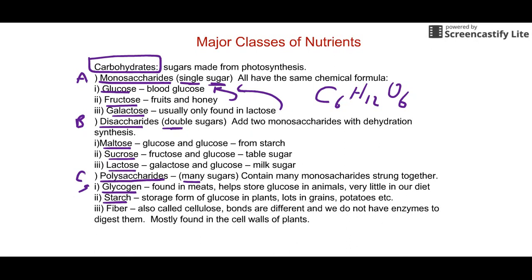The third polysaccharide is fiber, also called cellulose. We don't have the enzymes to digest it, so we don't absorb these sugars — we just excrete them. However, fiber serves important purposes: it reduces cholesterol and reduces the risk of colon cancer. Other animals like cows have those enzymes and can extract sugar from grass, whereas we get almost nothing from it.